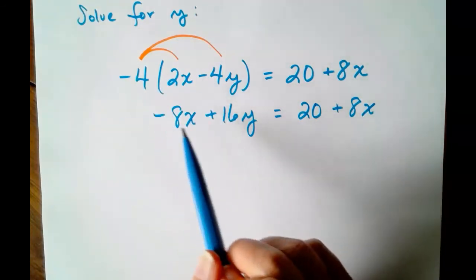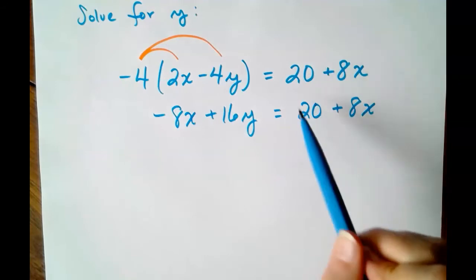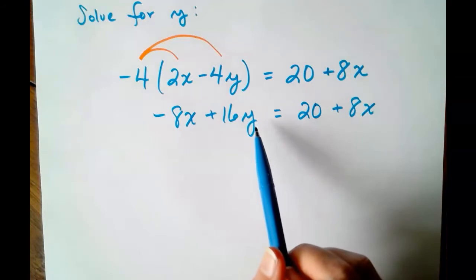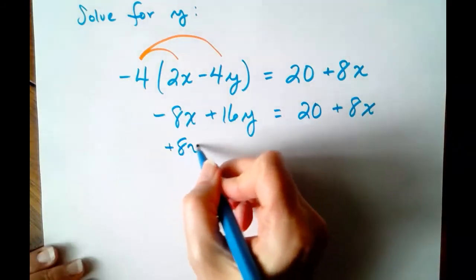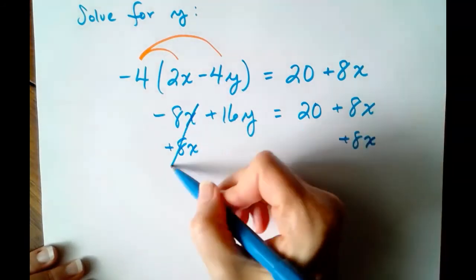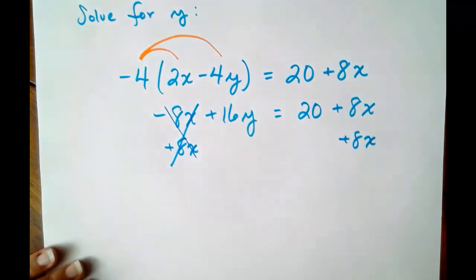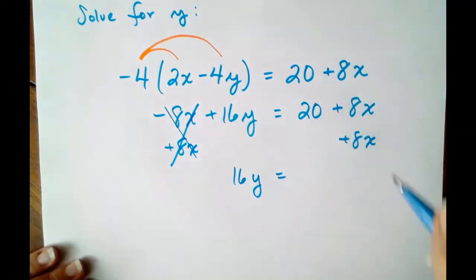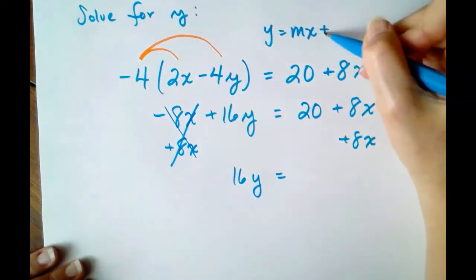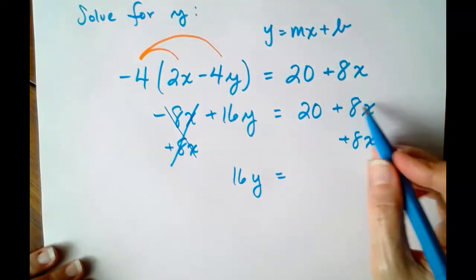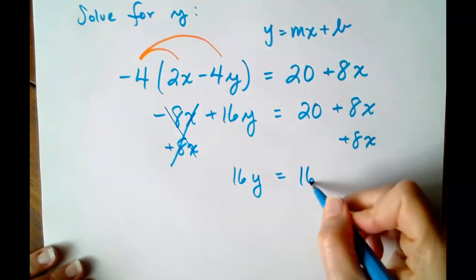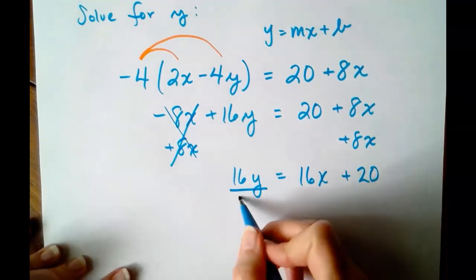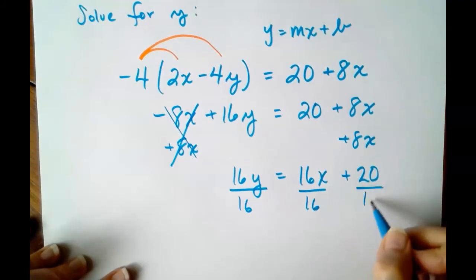We want all of our Y terms on the left and everything else on the right. So that means 16Y, it needs to stay. But 8X needs to go to the other side. So the X's are fully canceled on the left and 16Y remains. On the right, let's put it in Y equals MX plus B form. So 8X plus 8X is 16X plus 20. So from here, divide by 16, divide by 16, divide by 16.